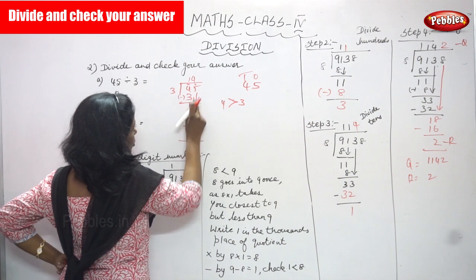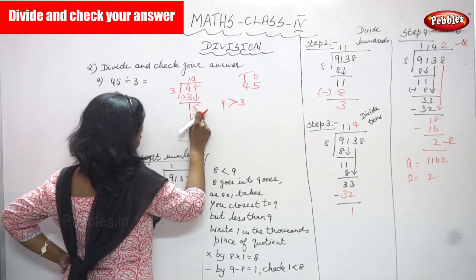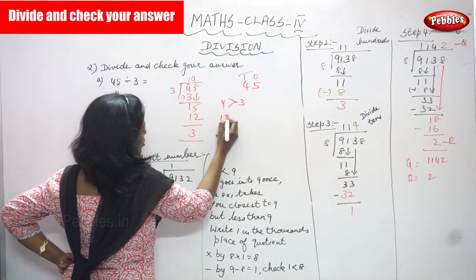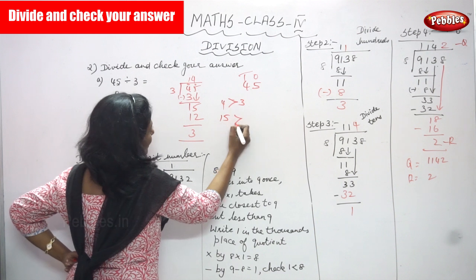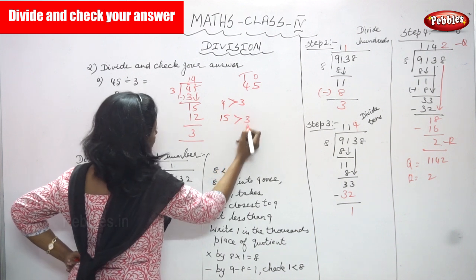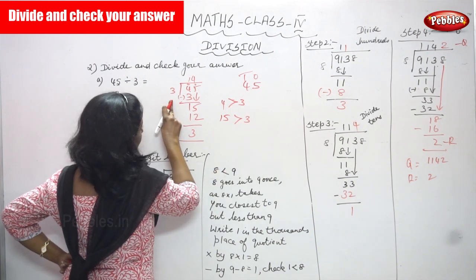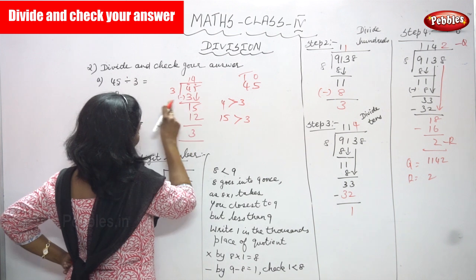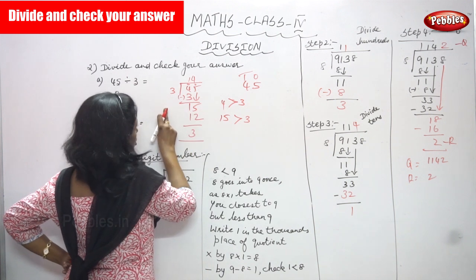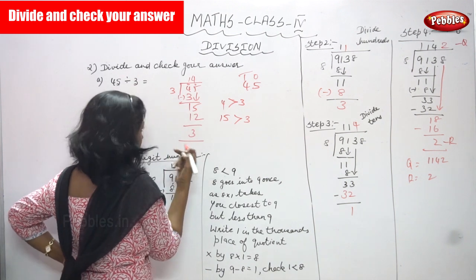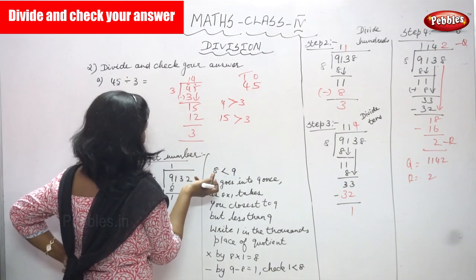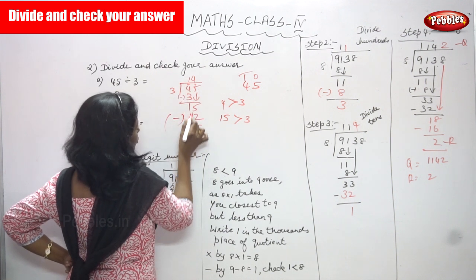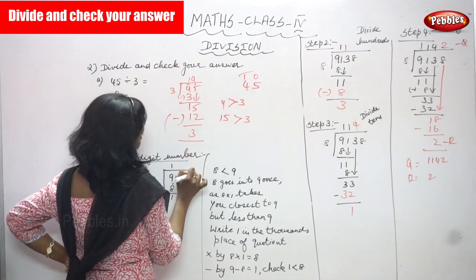After that, bring down the 5. So 1 and 5 gives us 15. 15 is greater than 3, so we divide 15 by 3. We use the 3 times table. 15 minus 12 gives what?